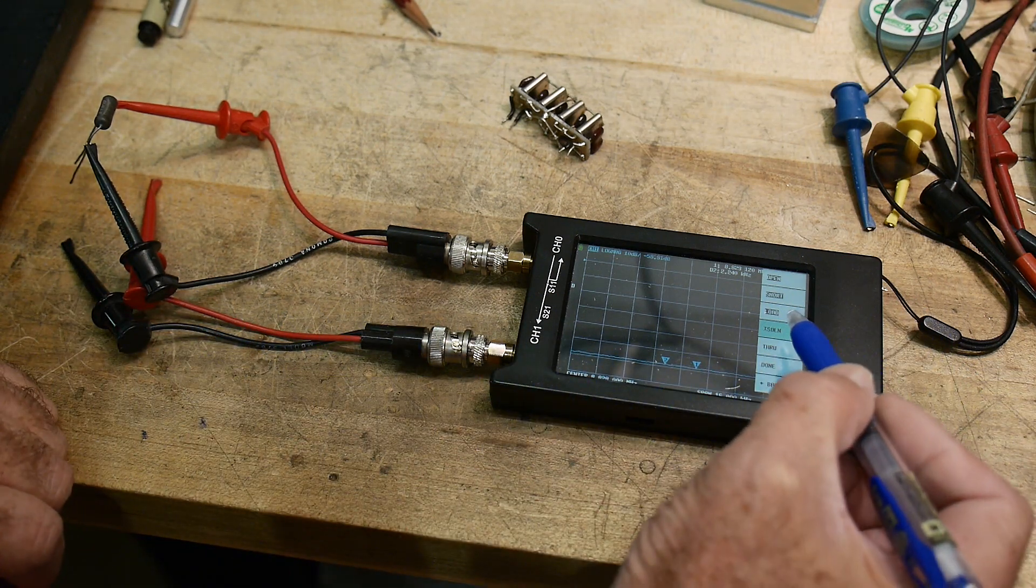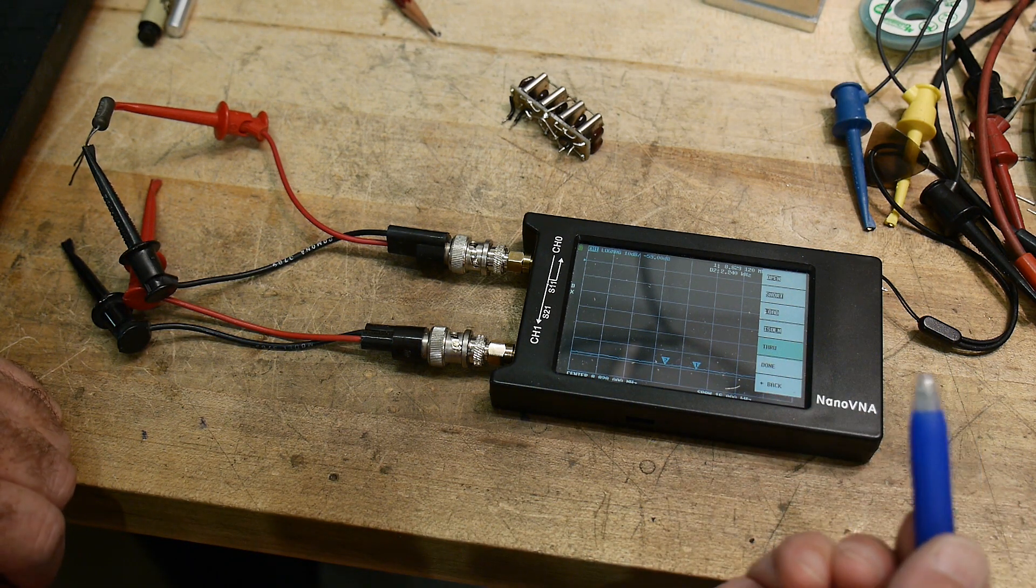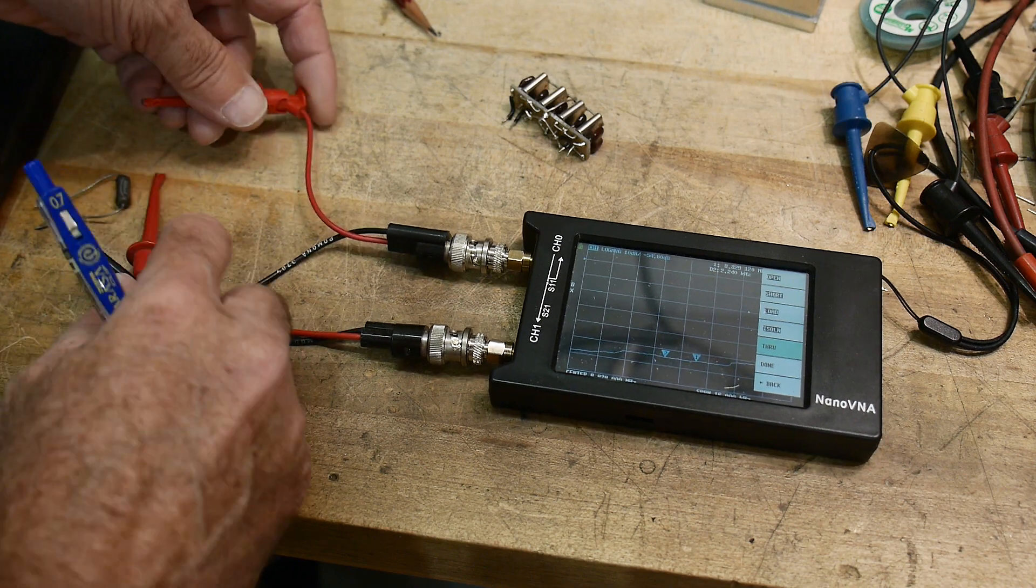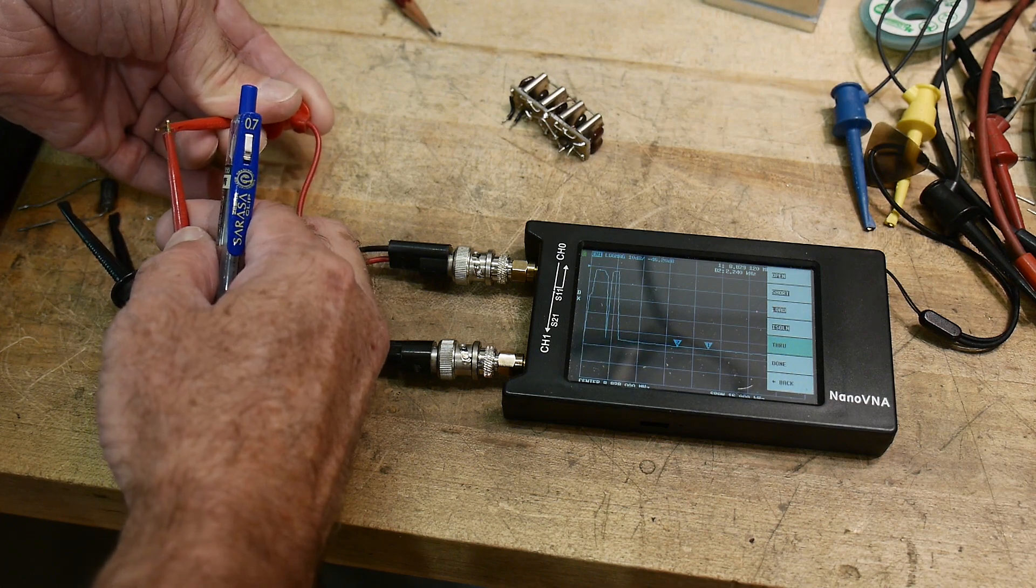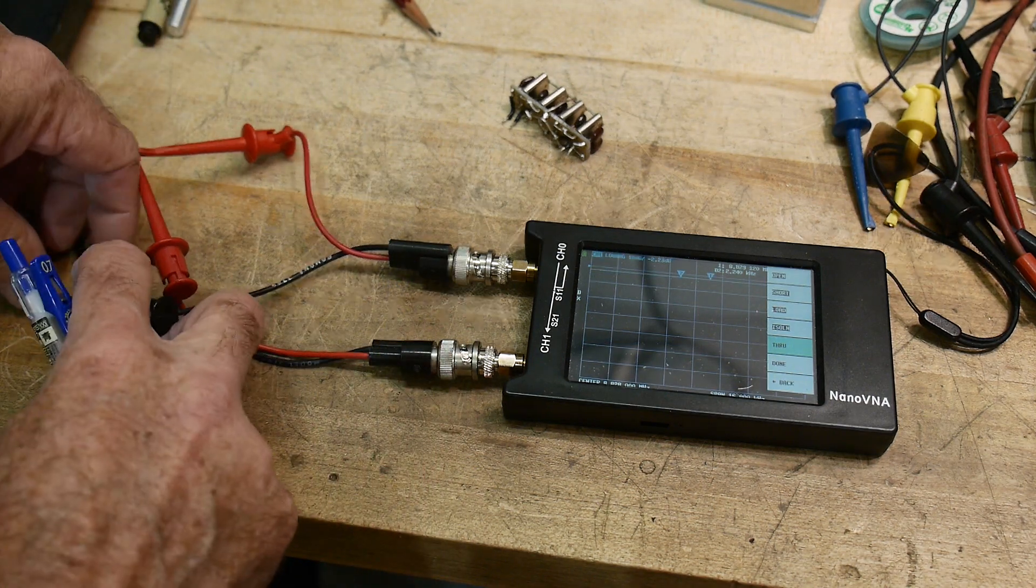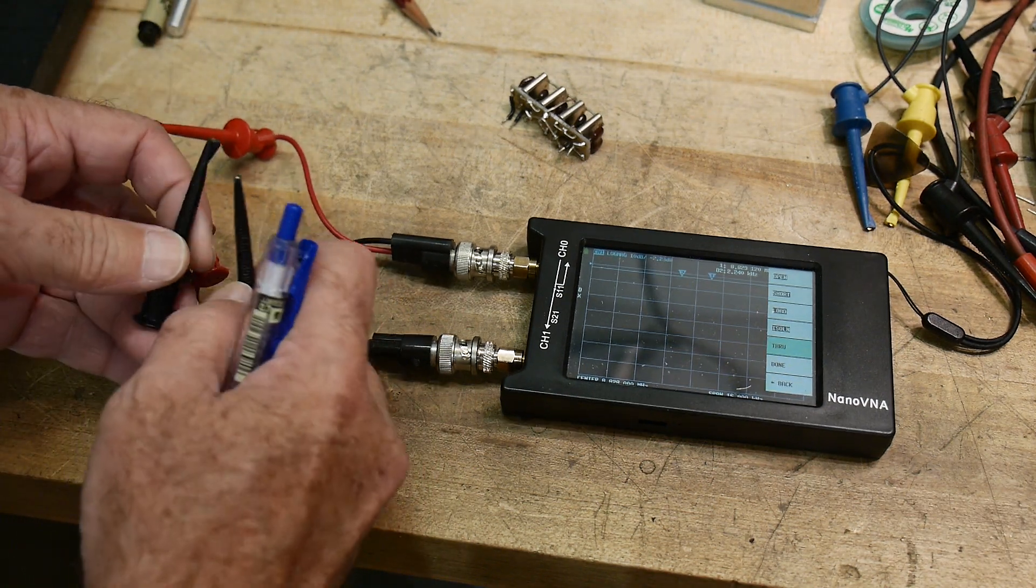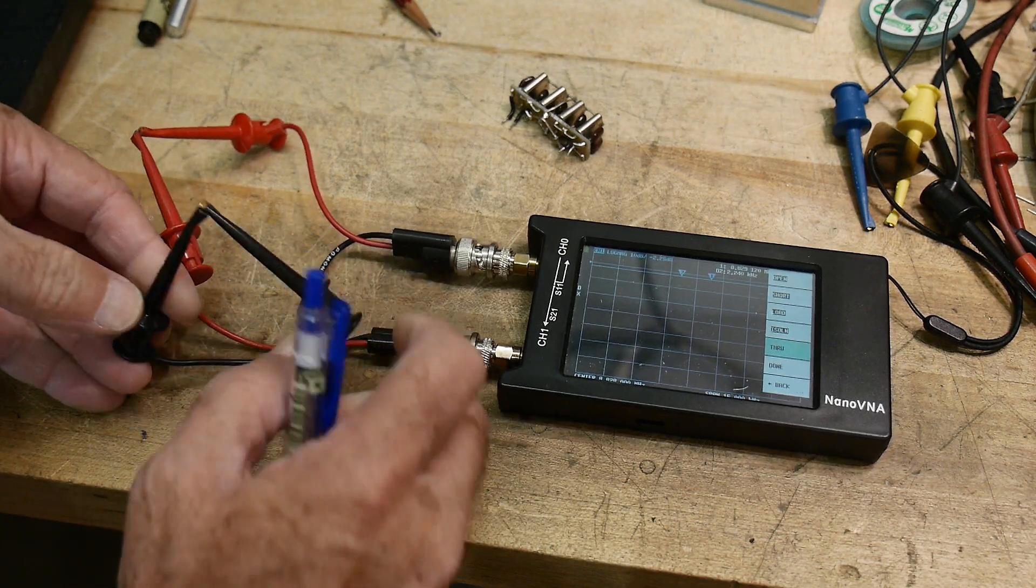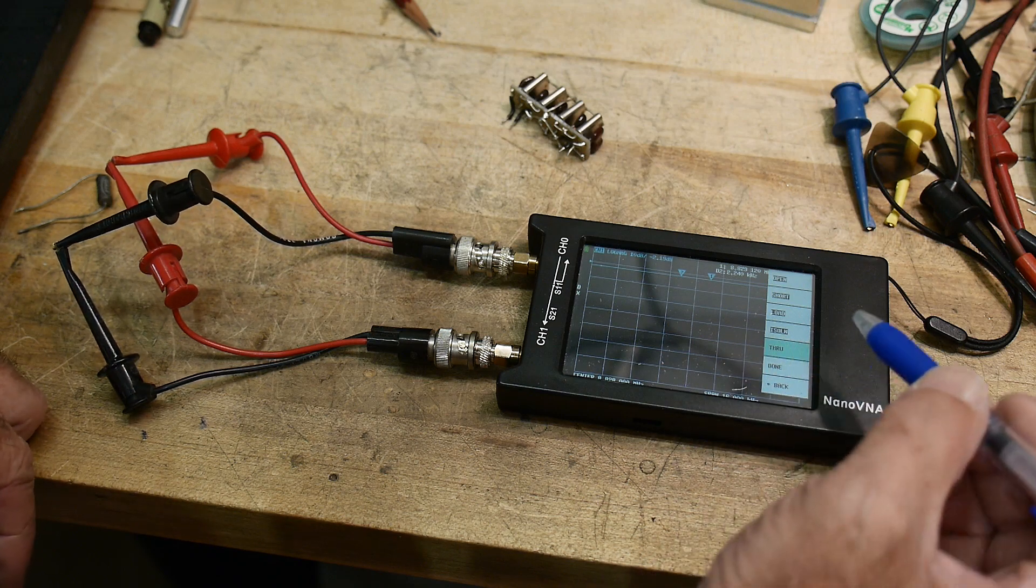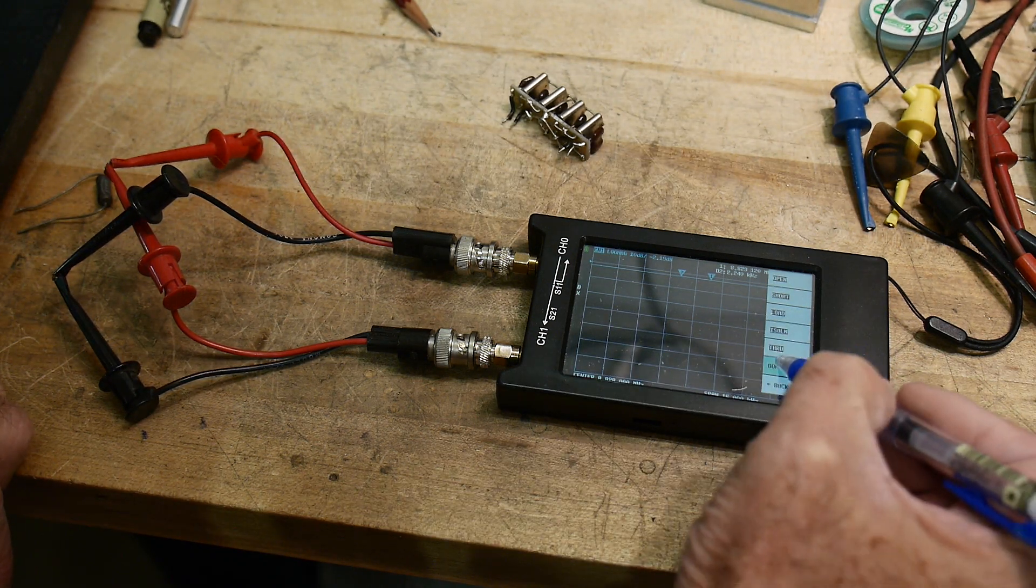Now I want to do isolation. I'm just going to click next. And a through. So through is I'm going to take these clip leads and short them together. That shorts channel one and two together, or zero and one together. I'm going to clip the grounds together too, because it does seem to make a little bit of difference. So I'm going to clip those together. So everything is shorted out. I'm going to say through. Done.